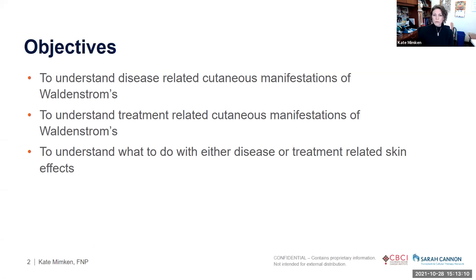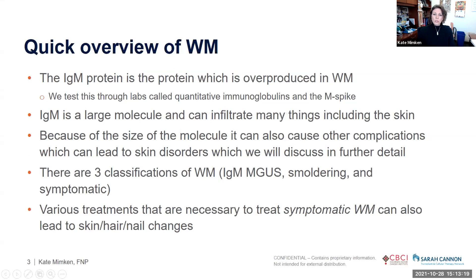Here's a list of objectives for the next half hour. Just a quick overview of WM: WM involves the IgM protein that is overproduced, which we check through quantitative immunoglobulins and an M spike. The IgM molecule is quite large and notorious for infiltrating many things, including the skin. Because of its size, it can also cause other complications. The three classifications of WM are IgM MGUS, smoldering, and symptomatic WM.